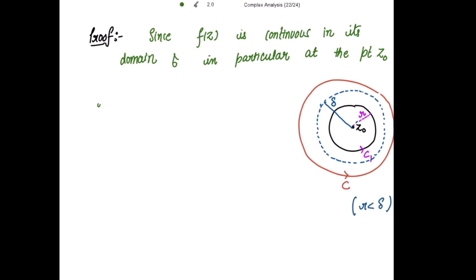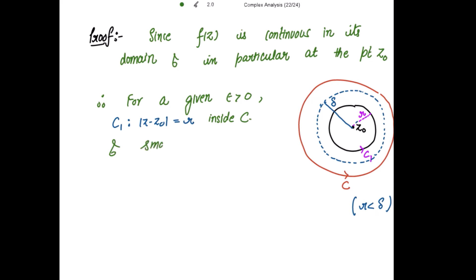Therefore, for a given epsilon greater than 0, we can construct a circle C1, that is |z minus z0| = r, inside C, and small enough such that the modulus of f(z) minus f(z0) is strictly less than epsilon for all z on C1.